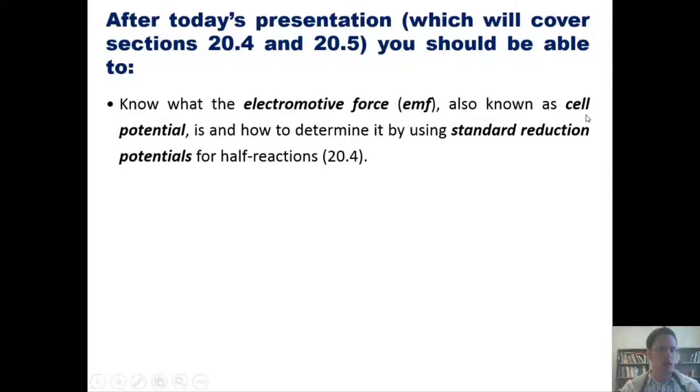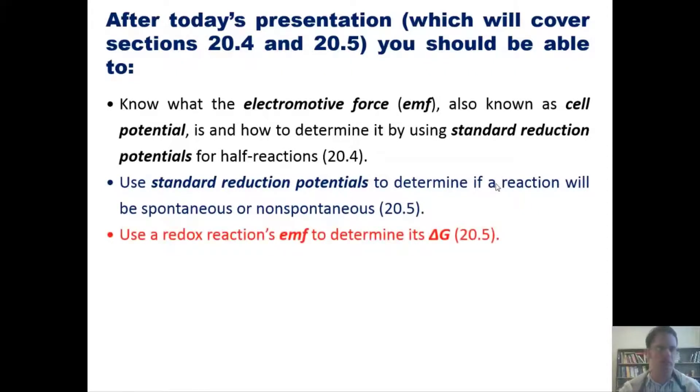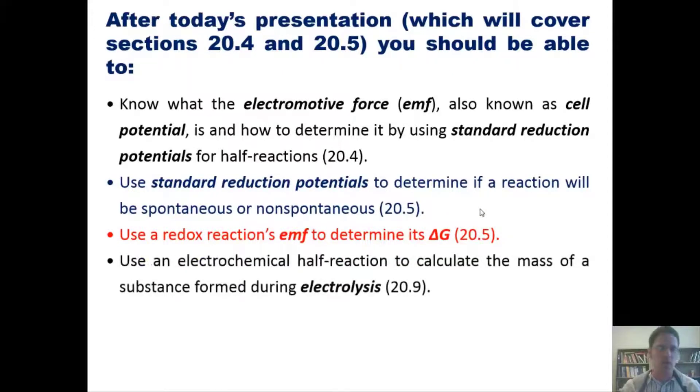First, know what the electromotive force or EMF, also known as cell potential, is and how to determine it by using standard reduction potentials or half reactions. Second, use standard reduction potentials to determine if a reaction will be spontaneous or non-spontaneous. Third, use a redox reaction's EMF to determine its Delta G. Fourth, use an electrochemical half reaction to calculate the mass of a substance formed during electrolysis and explain how rusting occurs. Please note, by the way, that we'll skip sections 6 and 7 from our text.